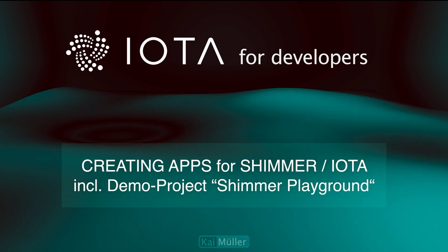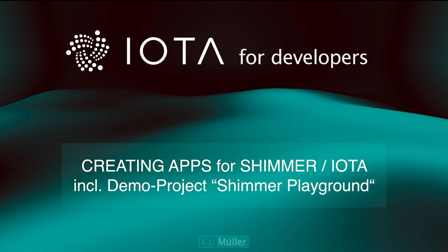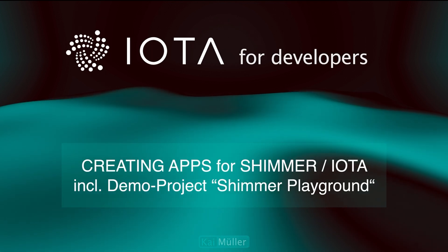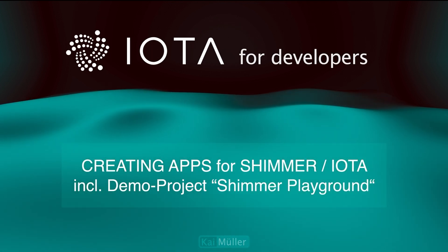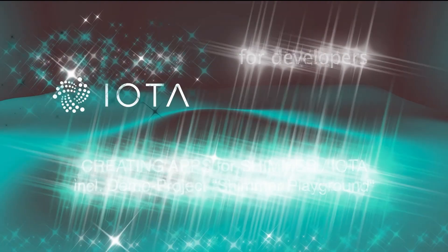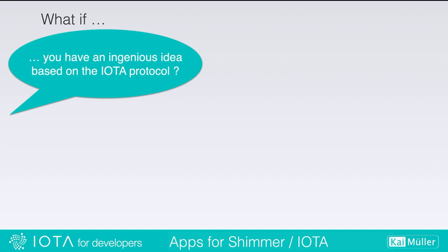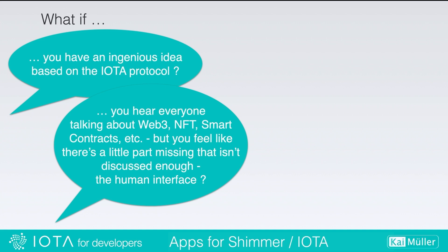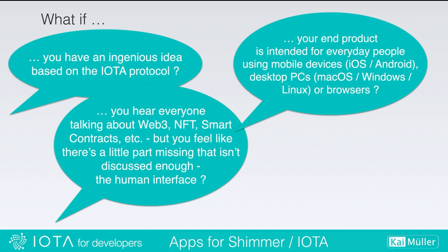Hi, my name is Kai. I'm a software developer and business analyst and I've been following IOTA since 2018. Today I'm going to show you my way to create an app for the Shimmer network which runs on mobile devices and desktop. What if you have an ingenious idea based on the IOTA protocol and you hear everyone talking about Web3, NFTs, smart contracts, etc., but you feel like there's a little part missing that isn't discussed enough — the human interface — and your idea and end product is intended for everyday people using mobile devices and desktop PC?